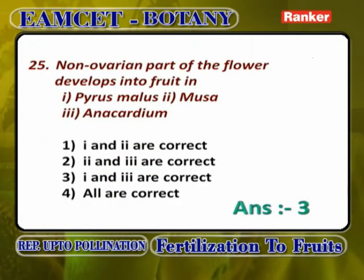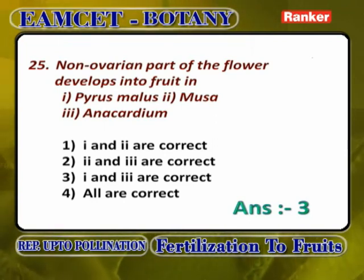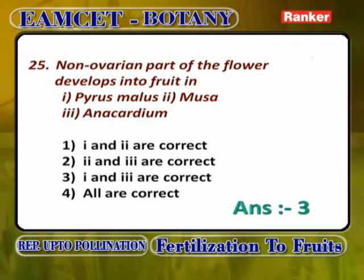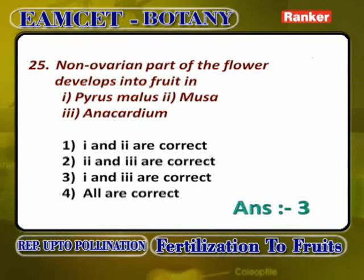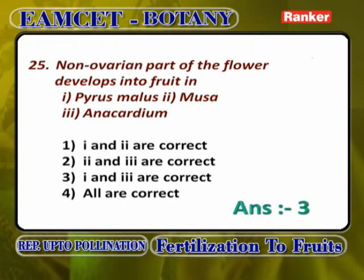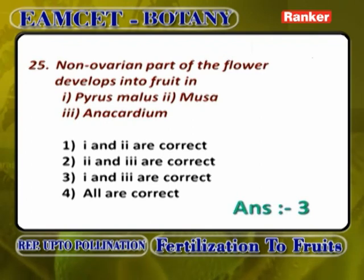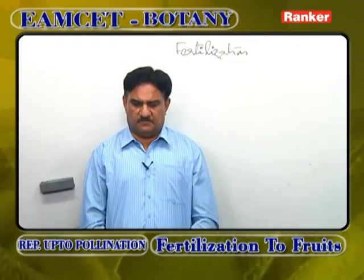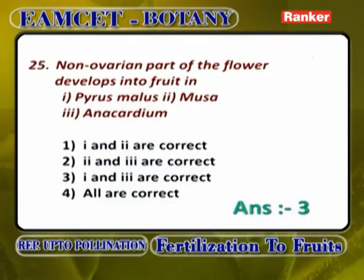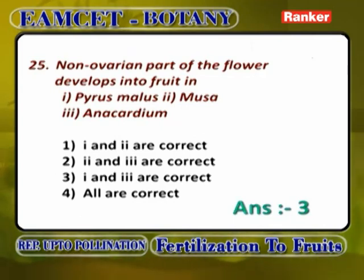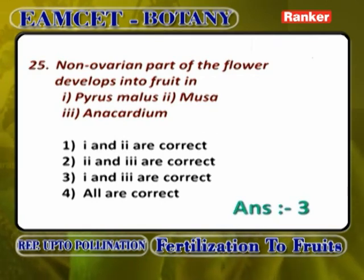Non-ovarian part of a flower developing into a fruit means false fruit — any part of the flower except the ovary that develops into a fruit. In Pyrus malus (apple), thalamus is edible; in Anacardium, pedicel is edible — both are false fruits. Musa is a true fruit — a berry where mesocarp and endocarp are edible. Answer is Pyrus malus and Anacardium.